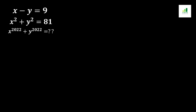Welcome to AMS. Today in this video we are going to solve a question. The given equations are x minus y equals 9 and x squared plus y squared equals 81, and our targeted equation is x to the power 2022 plus y to the power 2022.